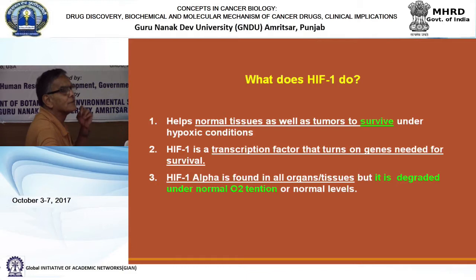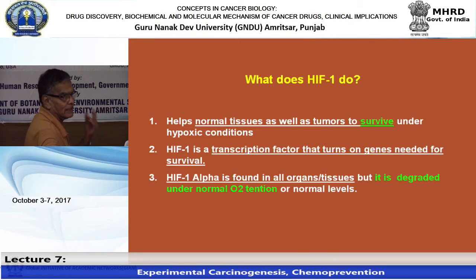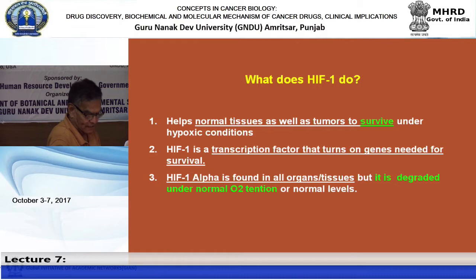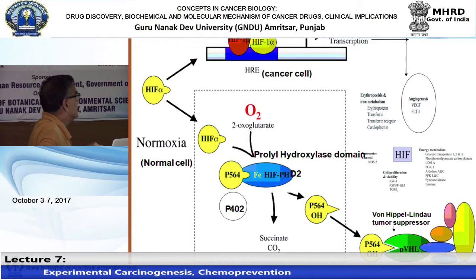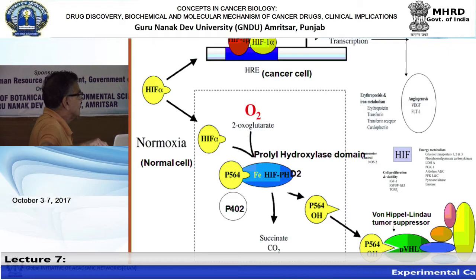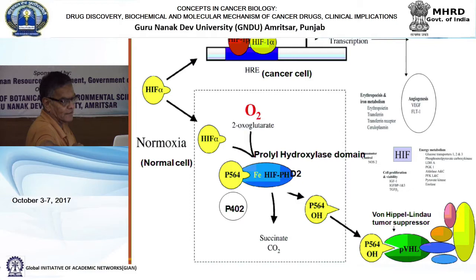Since HIF-1 alpha makes tumor cells survive in the absence of oxygen, inhibitors of HIF-1 alpha have been developed to kill tumor cells. The logic is: HIF keeps cells alive without oxygen, but we want to kill them under those conditions, so we need to eliminate HIF-1 alpha function. The signaling is complex, involving ubiquitination leading to degradation of HIF-1 alpha.